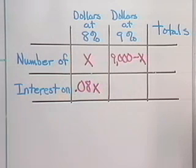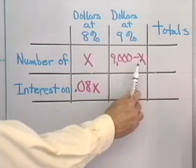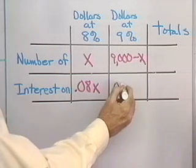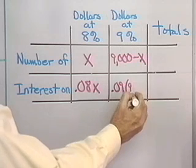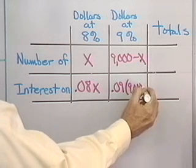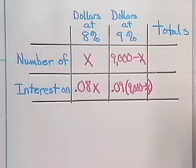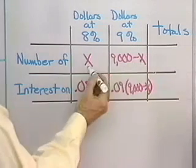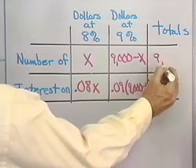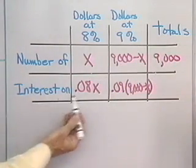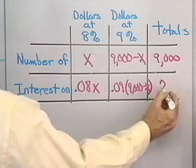The interest that's earned on the 9,000 minus X dollars invested at 9% is 9% of that amount. So, 0.09 times 9,000 minus X. Couldn't quite fit it in there. Now, I'll write down my totals here. The total amount of money invested, this plus this, is 9,000, just like we thought. And then the total amount of interest earned on both accounts comes out to be $750.